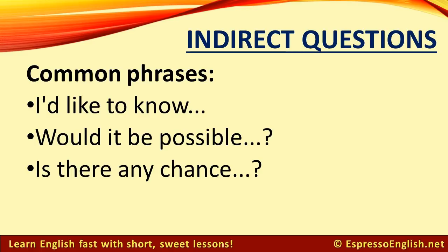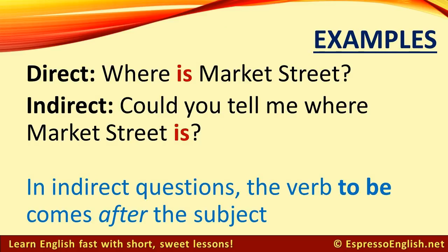There are a few grammatical changes with indirect questions. Let's look at some examples. Direct: 'Where is Market Street?' Indirect: 'Could you tell me where Market Street is?' In indirect questions, forms of the verb 'to be' come after the subject.